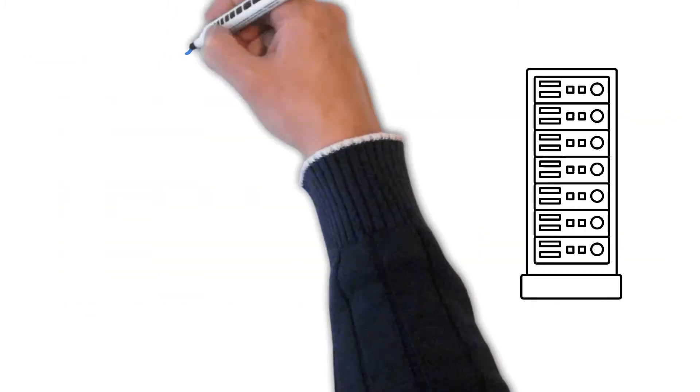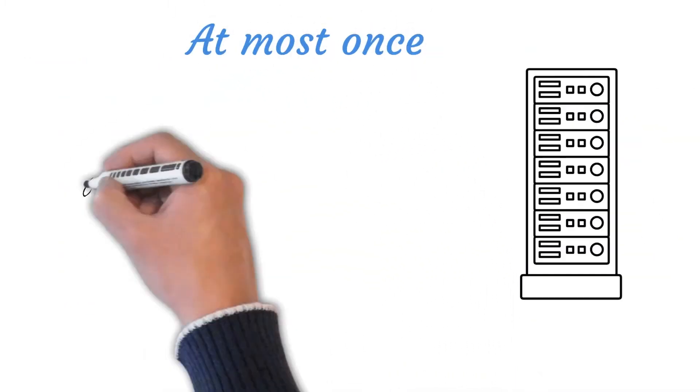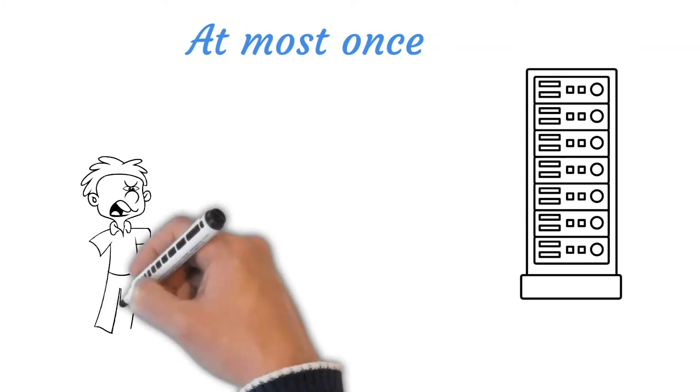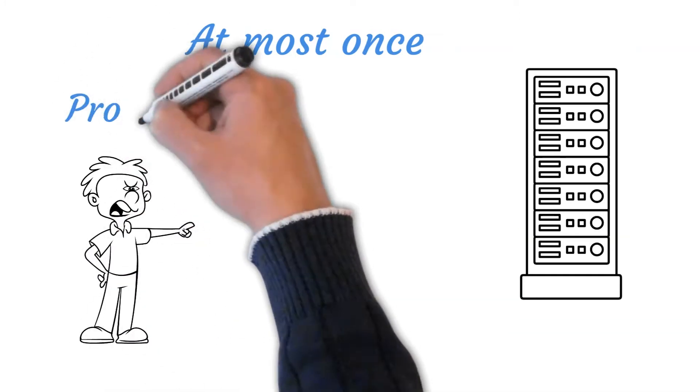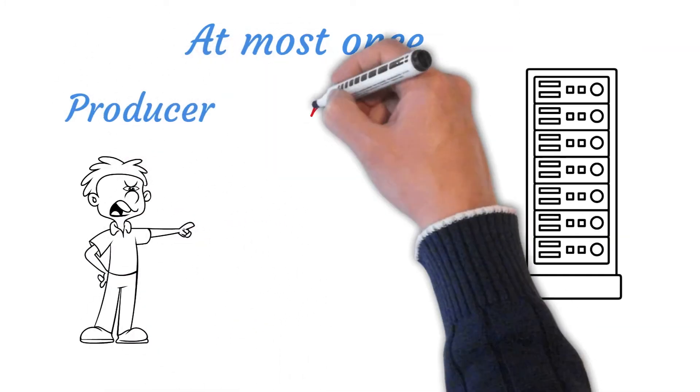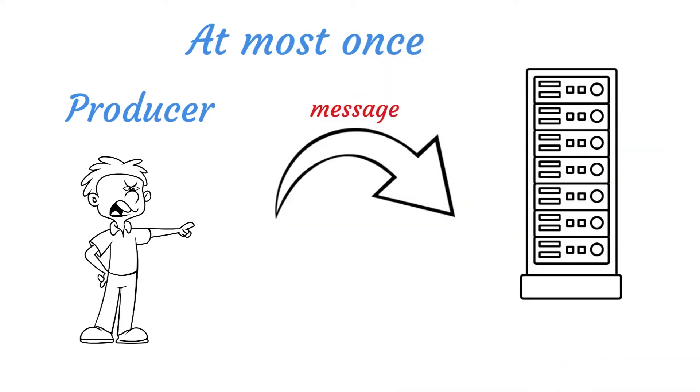So let's talk about at most once semantic. In at most once delivery semantics, a message should be delivered maximum only once. It is acceptable to lose a message rather than delivering a message twice in this semantic.